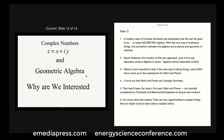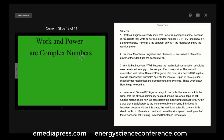A modern view of complex numbers has developed over the last 50 years or so — it's called geometric algebra. With this new way of looking at things, the connection between algebra, picture, and geometry is restored. David Hestenes, the inventor of this new approach, puts it this way: geometry without algebra is dumb, algebra without geometry is blind. Most importantly, in this new framework, new terms show up in expressions for work and power — work and power are complex numbers. That hasn't been the case in the past, because work and power are typically considered by physicists and mechanical engineers to be just real numbers, but now there are new opportunities to explain things we might not have been able to explain before.